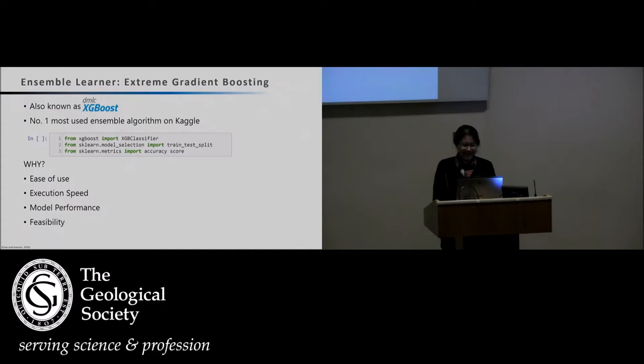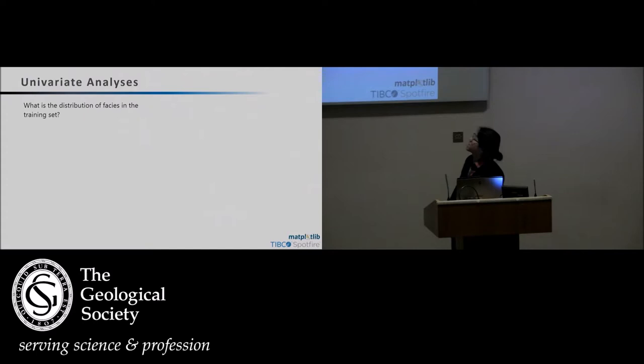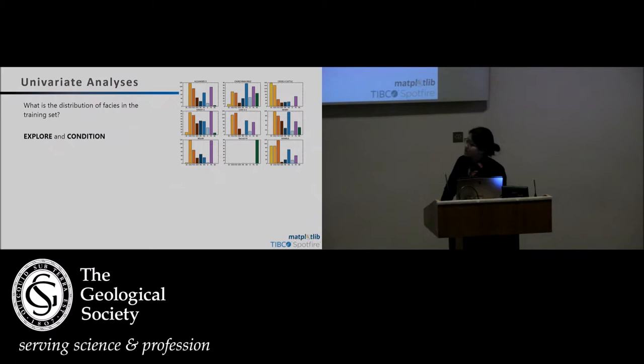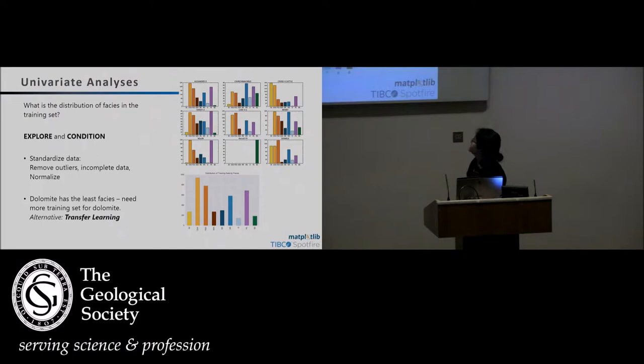How do we start? We have to explore the distribution of the data of our training set when we split it 80-20, and then perform univariate analysis. We can explore and condition our data, standardize it, remove outliers, remove incomplete data, and then plot it with different facies. What you can see here is the dolomite has the least amount of facies, and we definitely need more training set for this. You can kind of imagine that this will actually lower the score already before even running it.